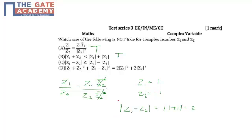Now let us check RHS. RHS is mod of Z1 minus mod of Z2. So mod of Z1 is 1 minus mod of Z2 is again 1, this is 0. So option C is false, it should be option C.